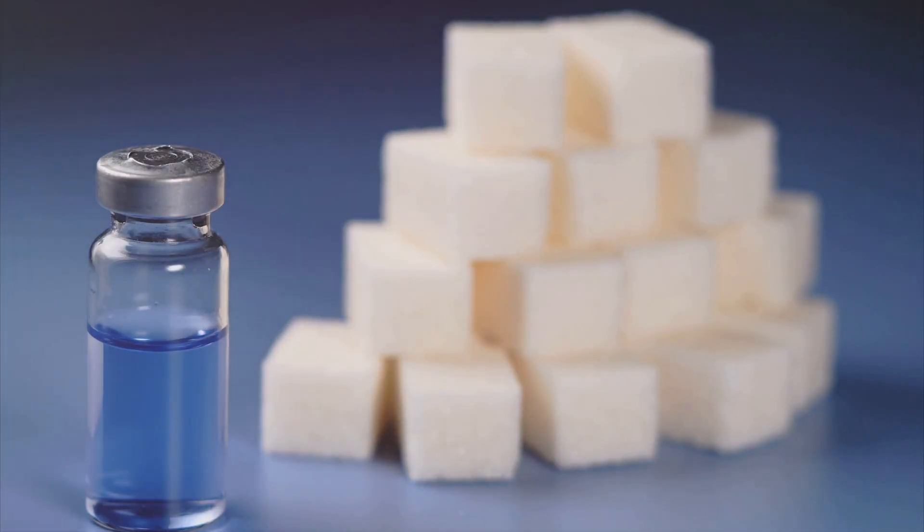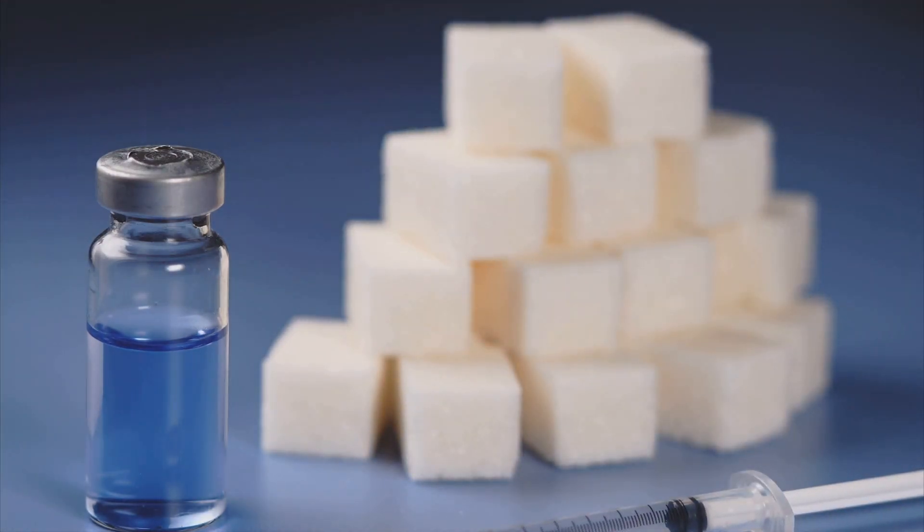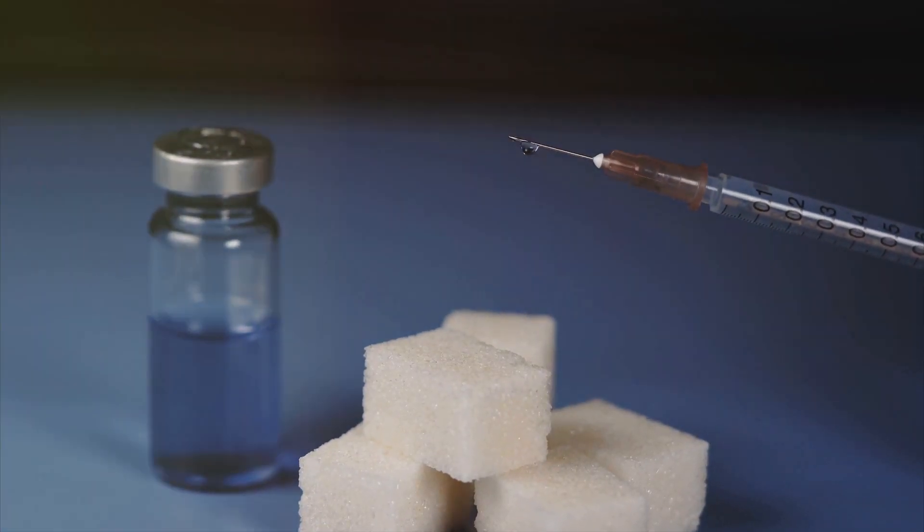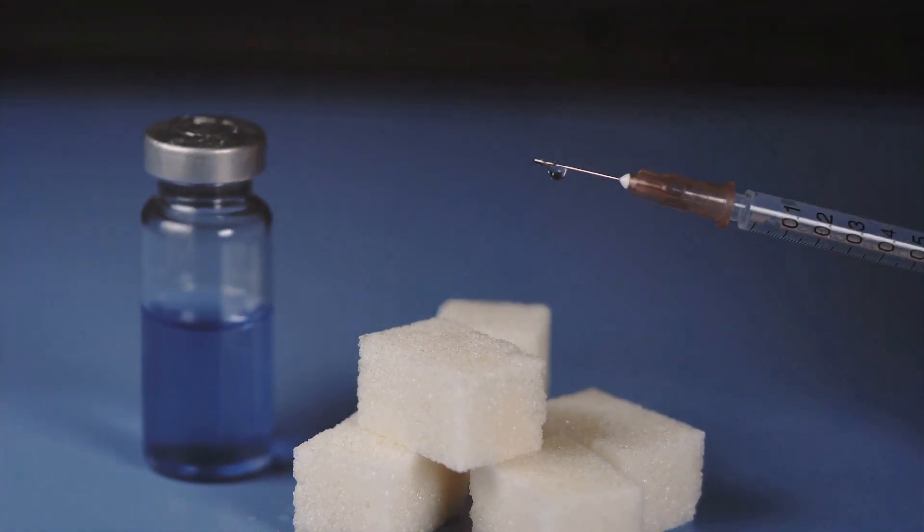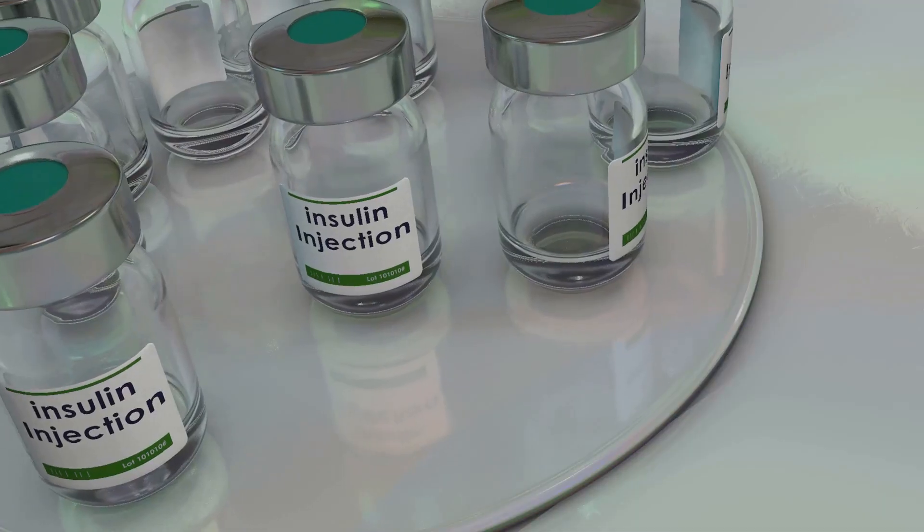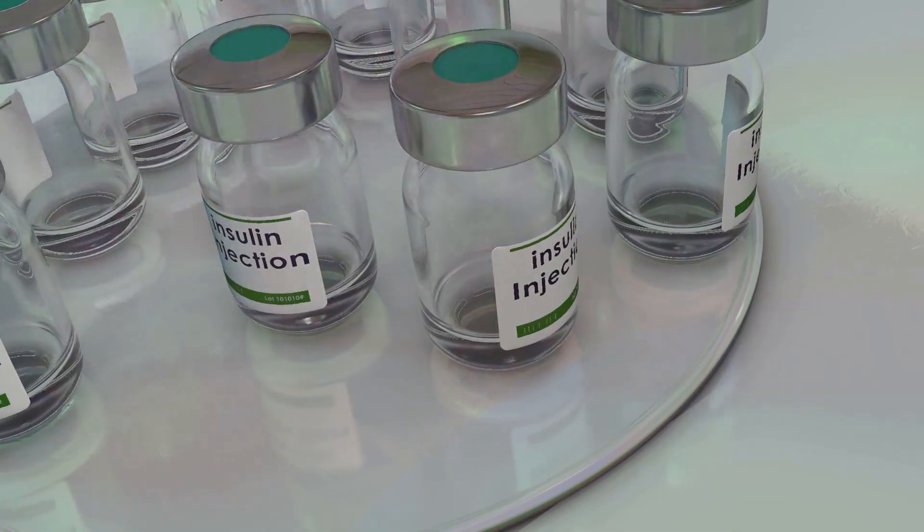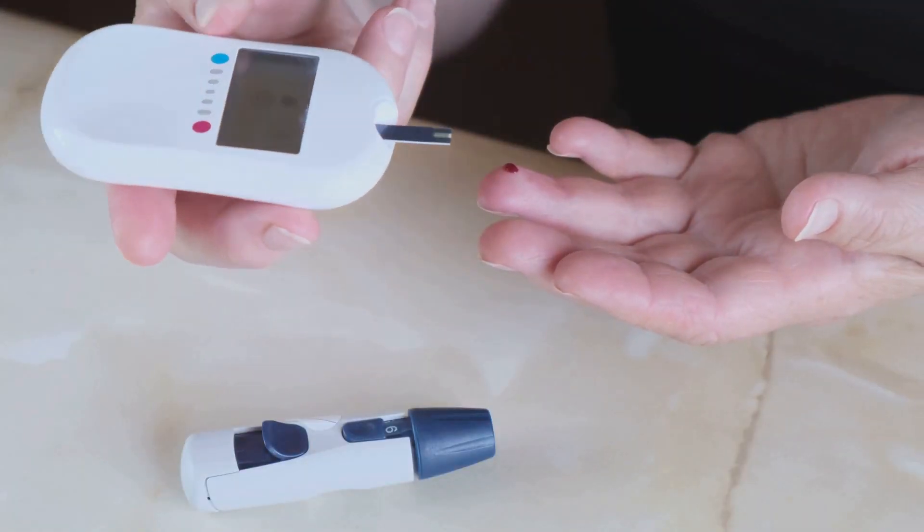Insulin, a hormone produced by the pancreas, plays a critical role in regulating our body's metabolism. It allows cells in our bodies to take in glucose from the bloodstream and use it as a source of energy. Insulin sensitivity is a measure of how effectively our cells respond to insulin. High insulin sensitivity allows the cells to take in glucose more efficiently, reducing the amount of insulin needed.